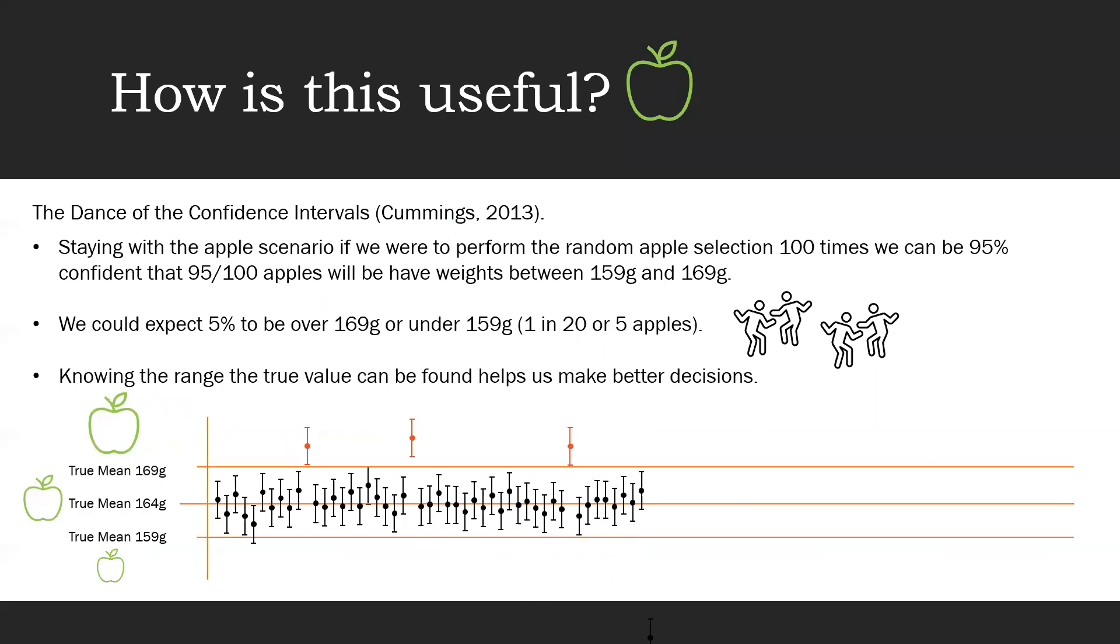We could repeat the random sampling 100 times and note that 95% of the time we will see the apple's weight fall between 159 and 169 grams, with 5 apples weighing outside of our intervals range. This would equate to 1 in 20 or 5% of the apples being heavier or lighter than the upper and lower confidence levels.